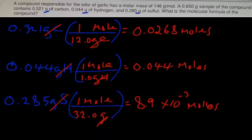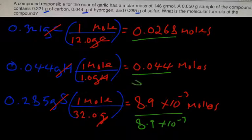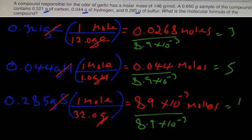We have to divide by the lowest number of moles, which is 8.9 times 10 to the negative 3. So we divide all the mole values by 8.9 times 10 to the negative 3. For carbon we get 3, for hydrogen we get 5, and for sulfur we get 1. So the empirical formula is C3H5S.